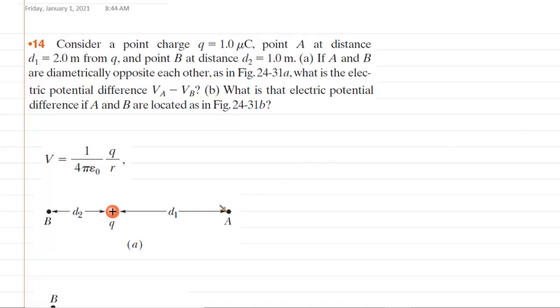In part A of the question, points A and B are located diametrically opposite each other, and our goal is to find the difference in the electric potential at location A and the electric potential at location B.